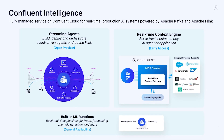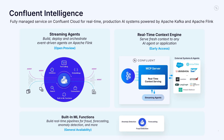The result of all this? You get AI that's fully grounded in context. With Confluent Intelligence, your AI agents and applications are no longer held back by fragmented infrastructure or stale data. Instead, it's simple to build, deploy, and scale event-driven, context-rich AI without infrastructure burden or guesswork.